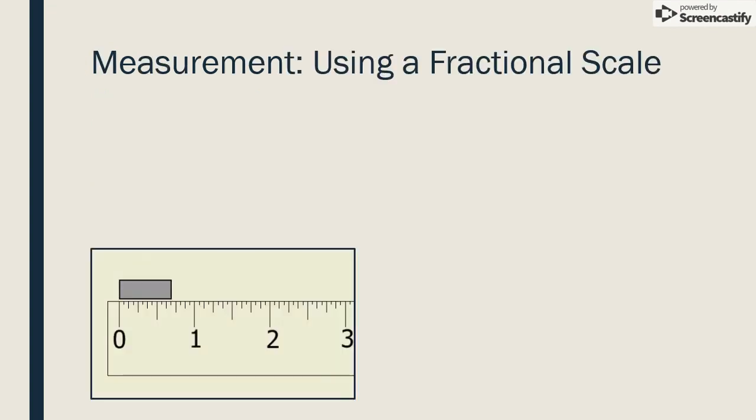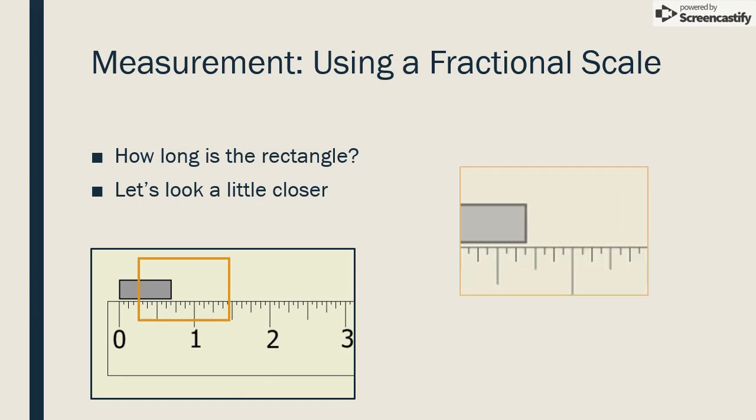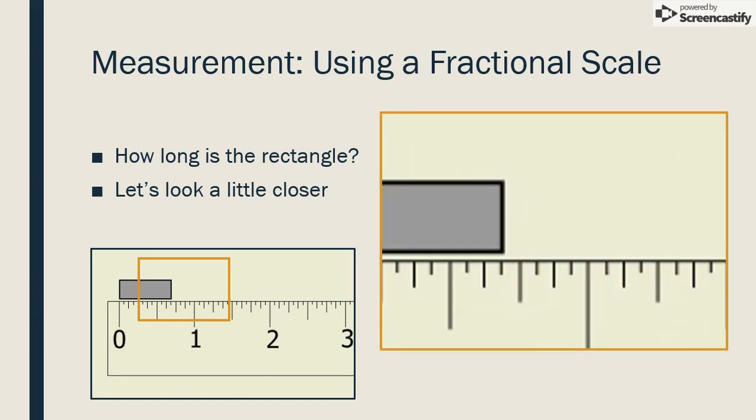Let's use the U.S. customary system to measure the length of the rectangle. It can help to locate the largest, easiest-to-find lines on the ruler, then work your way toward the actual measurement. The largest lines are the whole inches, in this case one inch. The next shortest line is the half-inch line, and halfway between the half-inch and whole-inch is three-fourths.